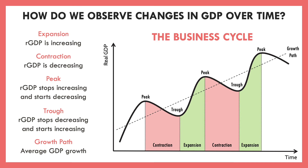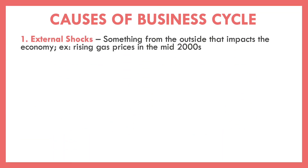So what causes all these ups and downs? One cause can be an external shock — something impacting our economy from the outside. For example, in the mid-2000s, we saw rising gas prices, and because of rising oil prices, there were many impacts on our economy. Not only is the United States heavily involved in petroleum refining, but we also saw transportation costs increase, which increased the prices of goods, creating ripple effects throughout the economy.